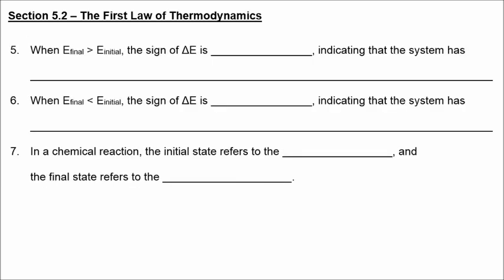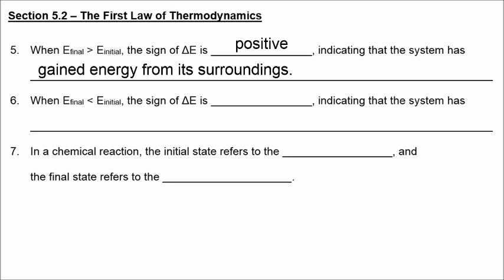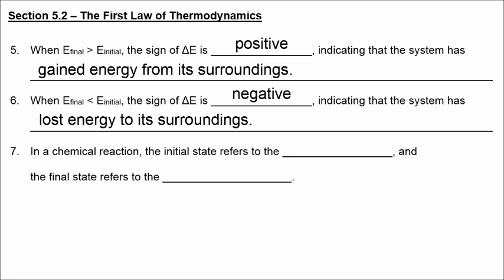If the energy at the end is greater than the energy at the beginning, the sign of delta E is positive, indicating that the system has gained energy from its surroundings. Conversely, if the final energy is less than the initial, the sign of delta E is negative, indicating the system has lost energy to its surroundings. In a chemical reaction, the initial state refers to the reactants and the final state refers to the products.